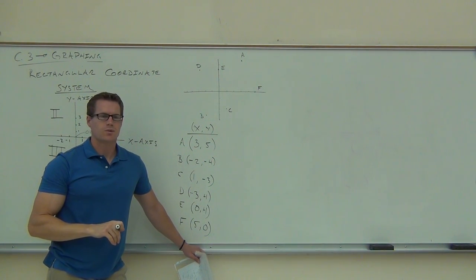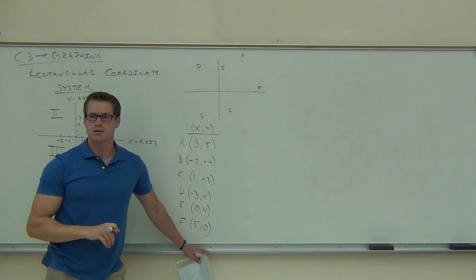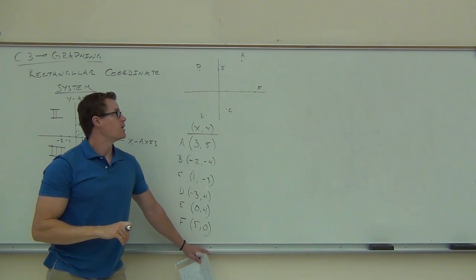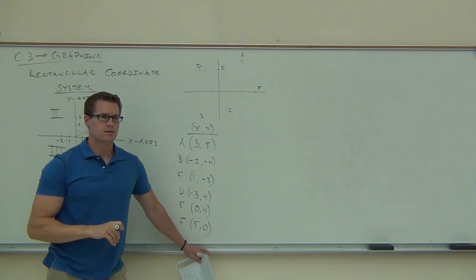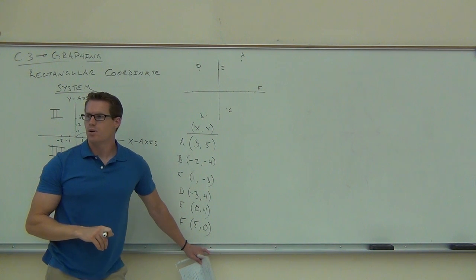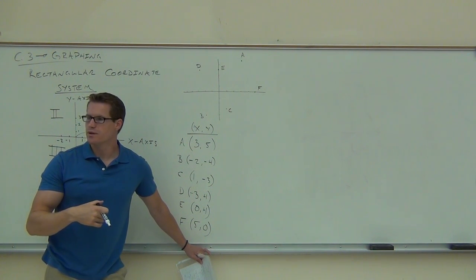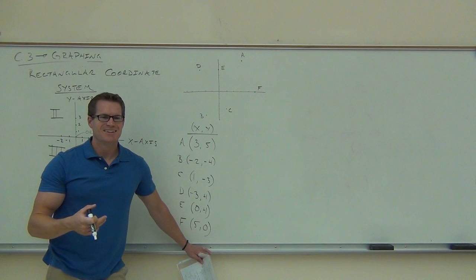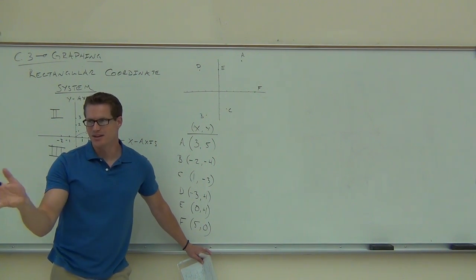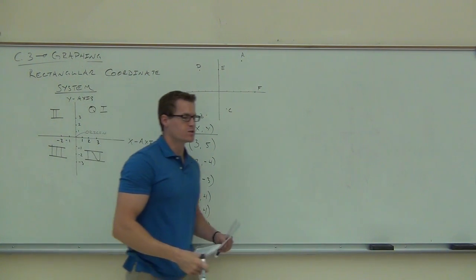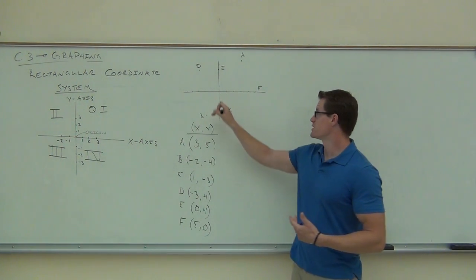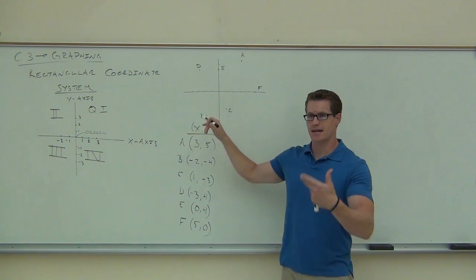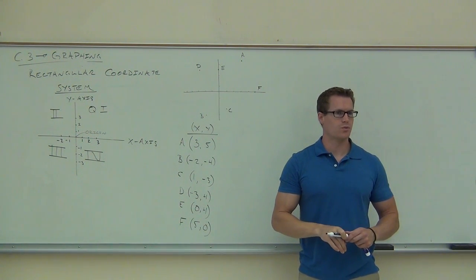Can you name the quadrants? Point C is in quadrant four. Point A is in quadrant one. Point B is in quadrant three. Points on the axes are not in any quadrant — point E would be on the Y axis, and point F would be on the X axis. If a point is at the center, you can say it's at the origin.